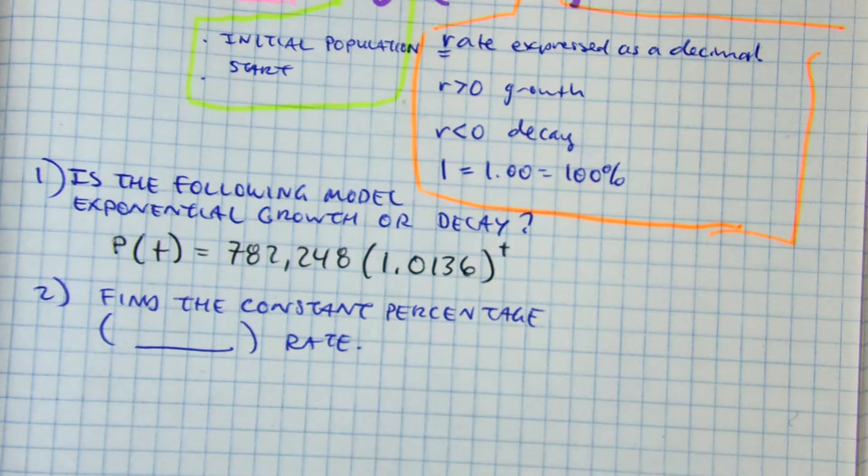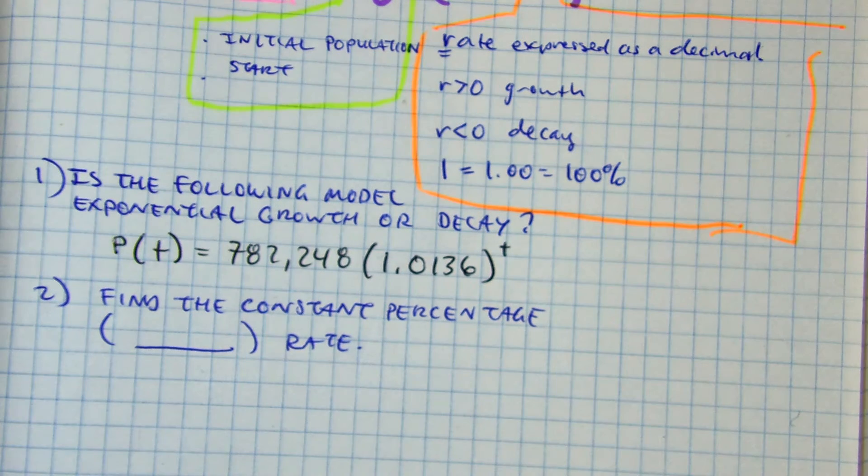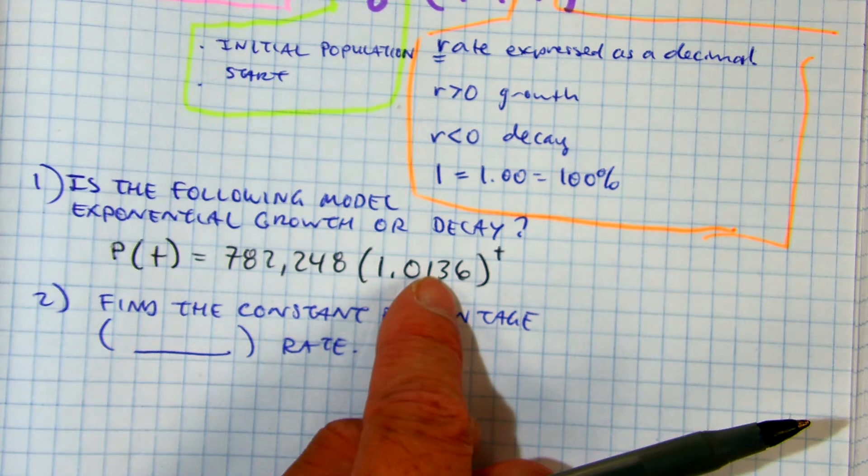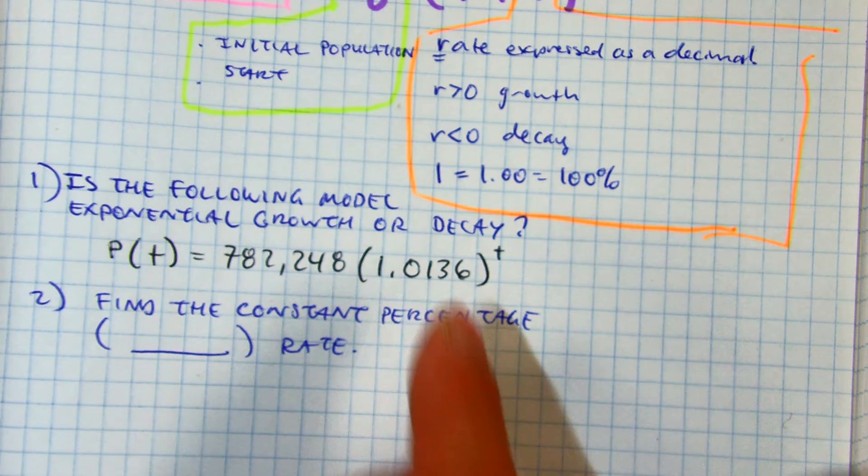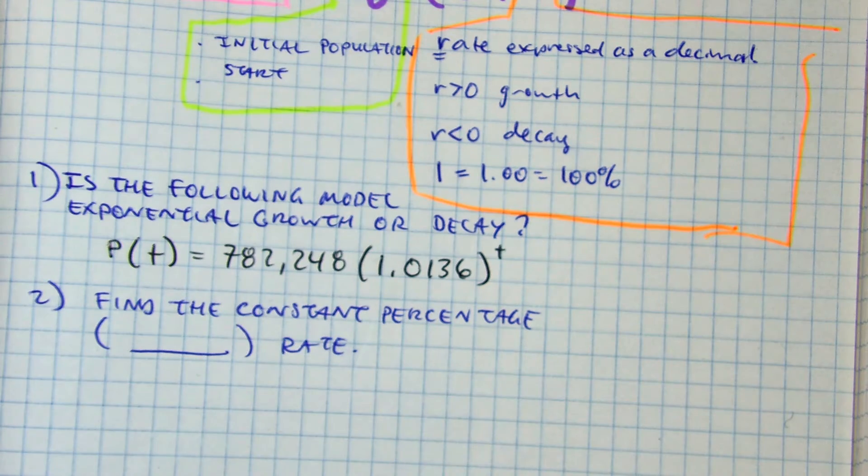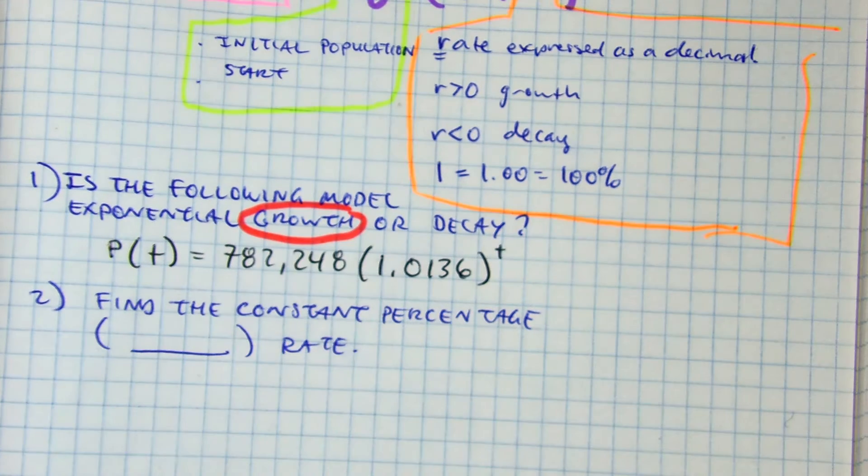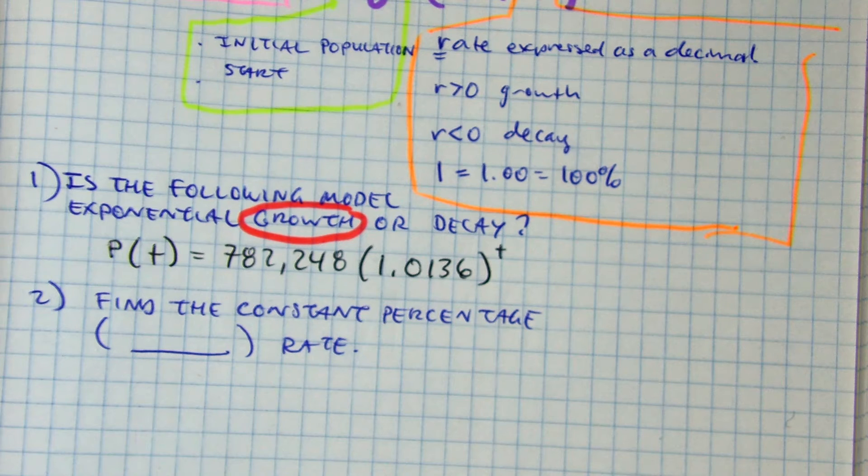Put your finger on the rate. Class, is this one greater than one or less than one? Greater than one. So we have what? Growth. So we need to find the exponential growth rate.